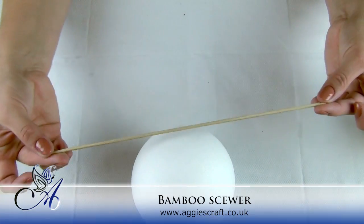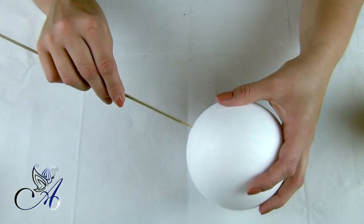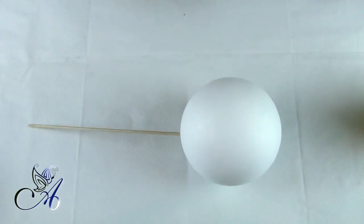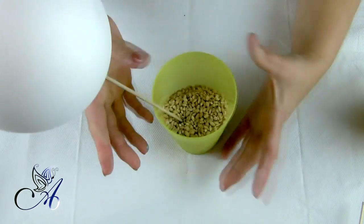When everything is ready, push a bamboo skewer inside the ball. This will make it easier to hold when you're in the process of decorating. I always put some grain in a cup and stick my bauble in it for drying.